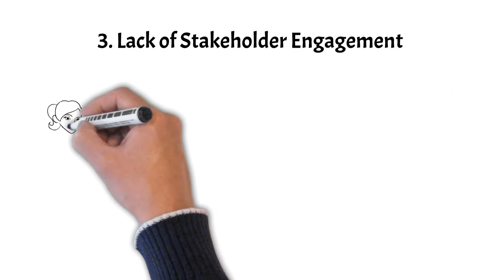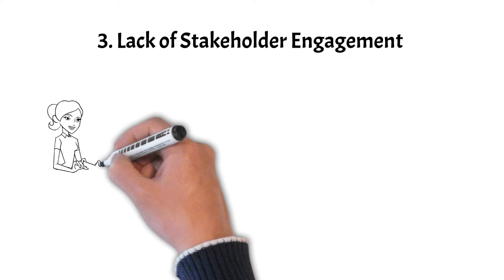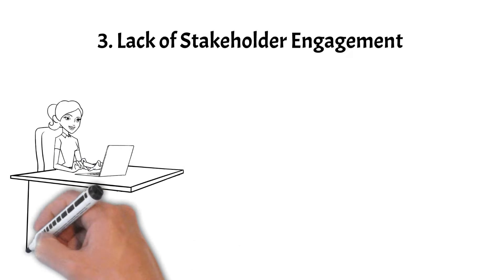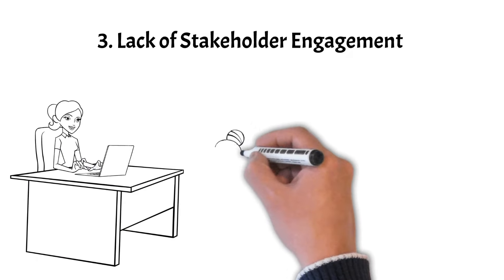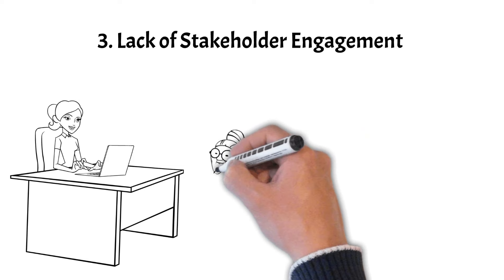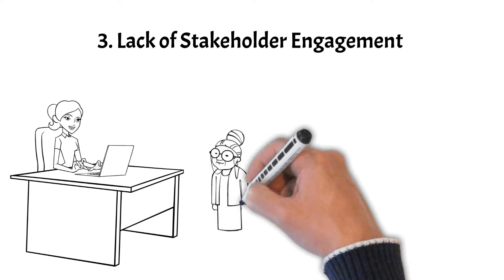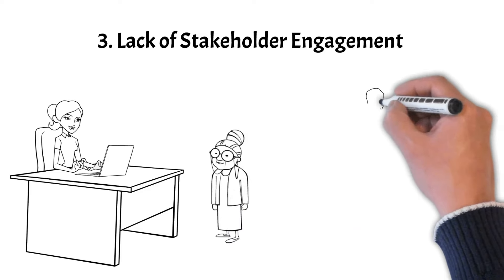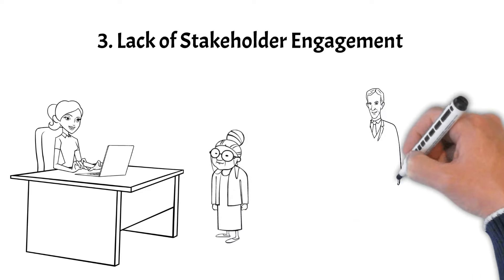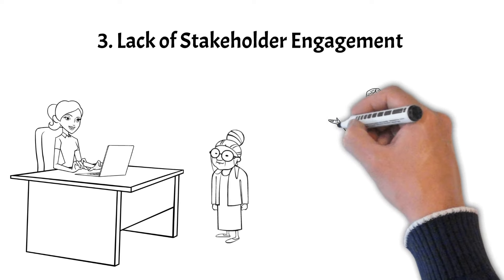Pitfall 3 revolves around stakeholder engagement. Engaging stakeholders throughout the project's lifecycle is crucial for project success. When stakeholders are not adequately involved or informed, it can lead to misunderstandings and resistance.